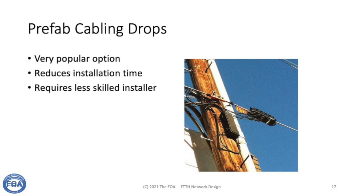Fiber-to-the-home has led to a lot of component development to reduce the cost of installation and drops. Part of that is prefab cabling — a lot of systems are being built around prefab cabling like the one shown here. A terminal with waterproof connectors is attached to an aerial cable on the messenger, and all one needs to do to add a subscriber drop is to unplug the cap on a drop port and screw a connector onto a cable that goes to the subscriber and screws into a connector on a drop box on the side of the subscriber. No termination needed — all you have to do is run a cable. This has become very popular, particularly in urban areas.